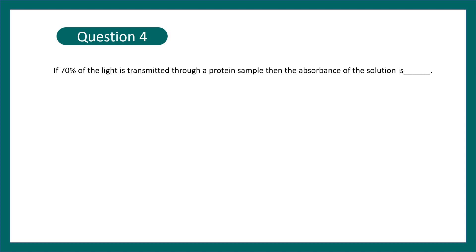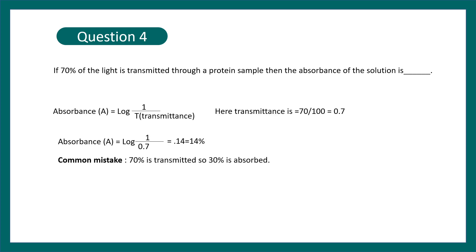So the correct answer is 14%. Absorbance is equal to log into 1 by transmittance. Here the transmittance is 0.7 and if you plug in the values, it would be log 1 by 0.7. So the correct answer would be 0.14 or the percentage value would be 14%. The common mistake you guys do is like 70% is transmitted so 30% is absorbed, but that's not the absorbance. So this is a common mistake that people make. So always keep these formulas in mind.